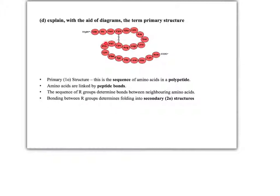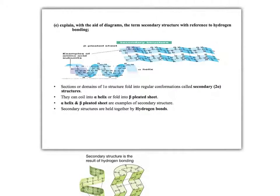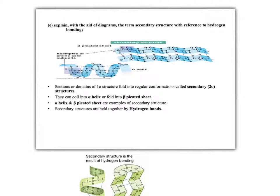The primary structure folds into secondary structures. There are two secondary structures you need to know about: an alpha helix and a beta pleated sheet. Sections or domains of a polypeptide fold up into these particular characteristic structures. The key thing about both is that they are held together by hydrogen bonds — the only bond we need to worry about for secondary structures.